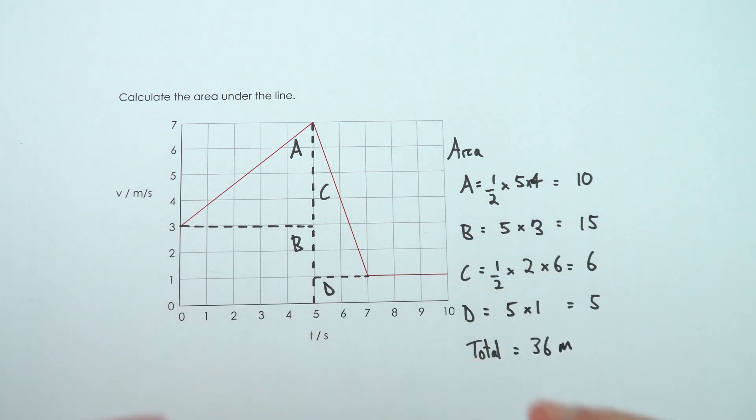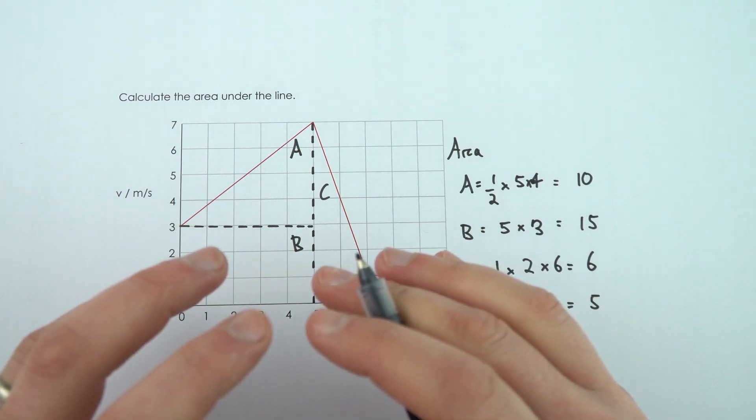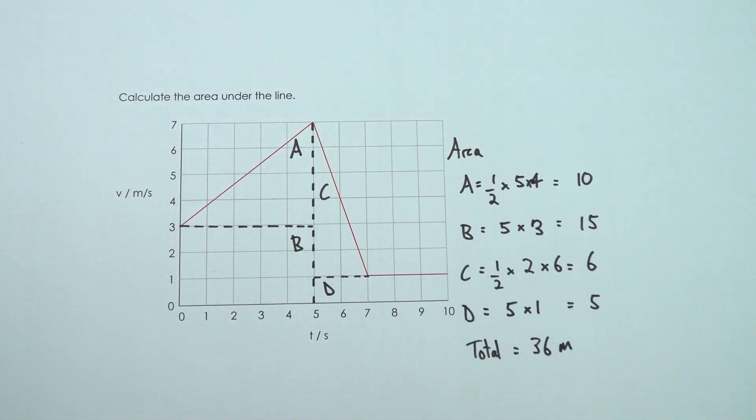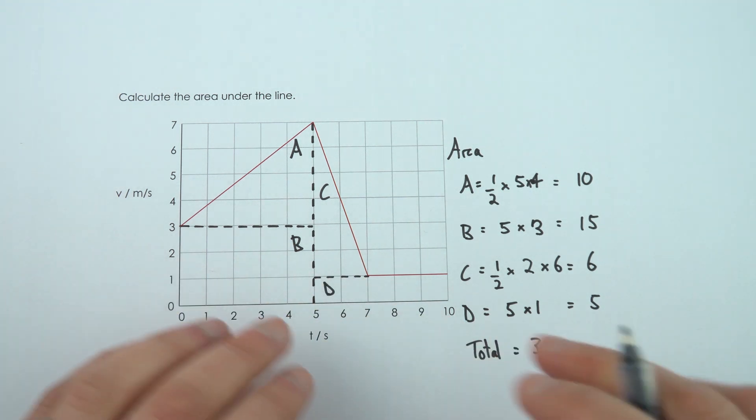So the reason that it's really important to know how to calculate the area under the line on the graph is because in physics it actually means something. And often you'll be asked to do this with velocity-time graphs, and therefore the area is equal to 36 meters.